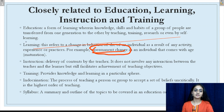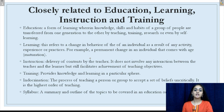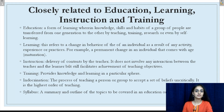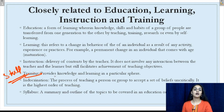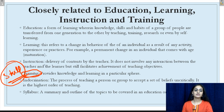Instruction is the delivery of contents by a teacher. It does not involve any interaction between the teacher and the learner, but still it facilitates the achievement of teaching objectives. For example, a teacher gives an instruction to a student to complete a particular chapter — there hasn't been direct interaction, but once the instruction has been given, the teaching objectives are assumed to have been fulfilled. Training provides knowledge or learning about a particular skill or in a particular sphere of life. For example, training someone in the art of stitching is known as training, since we are providing knowledge to develop a particular skill.